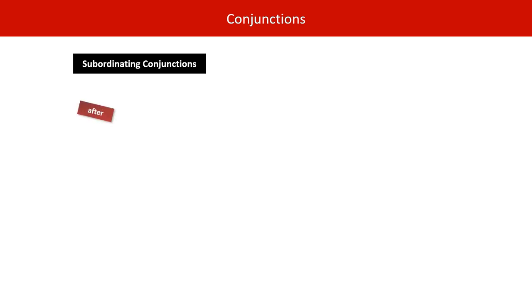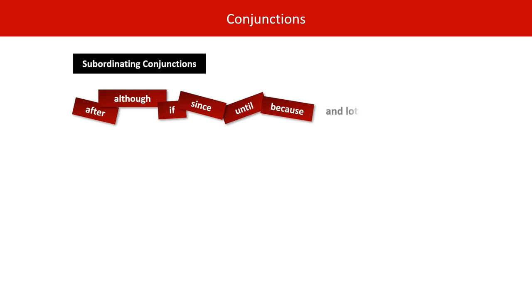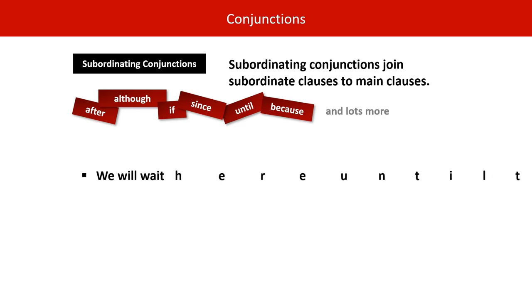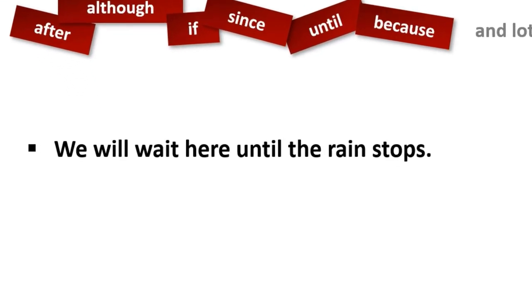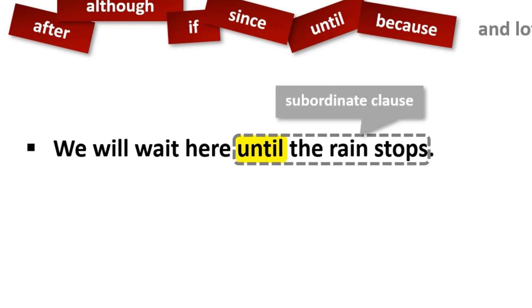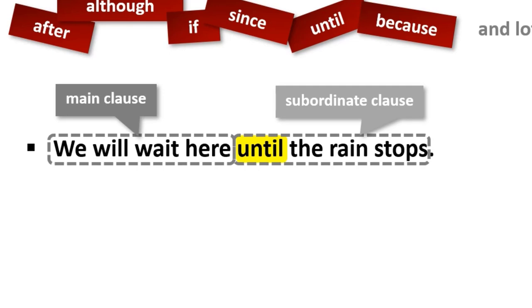Let's move on to subordinating conjunctions. Some examples: after, although, if, since, until, because — and there are many more. Subordinating conjunctions join subordinate clauses to main clauses. For example, 'We will wait here until the rain stops.' Until is our subordinating conjunction; it sits inside the subordinate clause and joins it to the main clause.